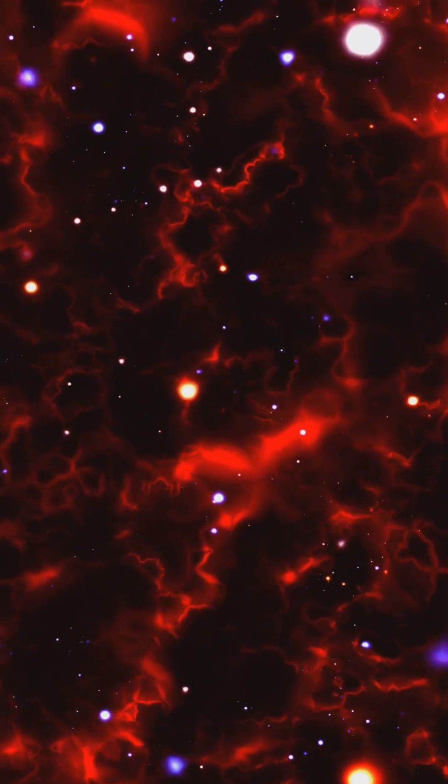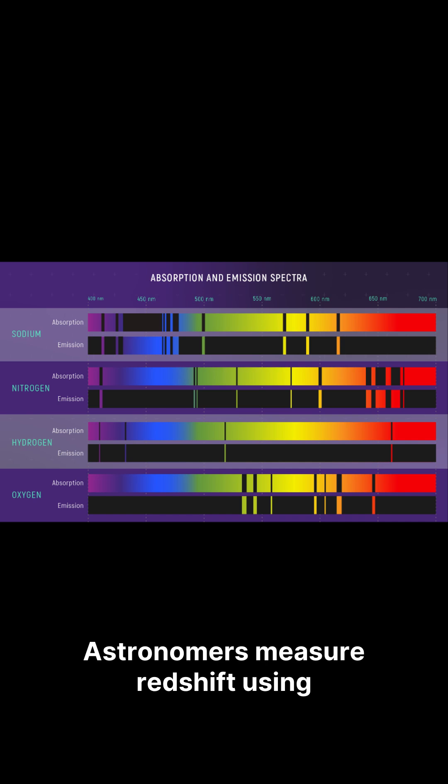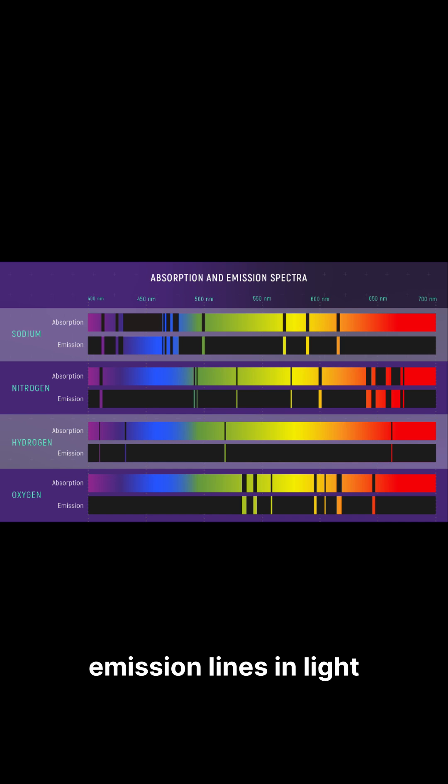The afterglow of the Big Bang. Astronomers measure redshift using spectroscopy, analyzing absorption or emission lines in light spectra. A shift towards the red end indicates redshift.